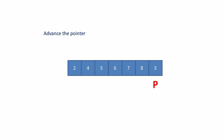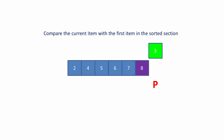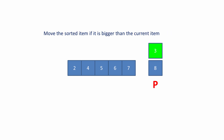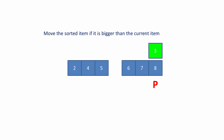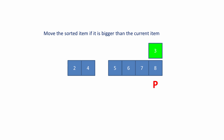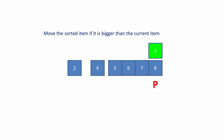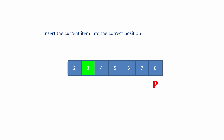Again, advance the pointer. Select the first item in the unsorted section — this is the new current item. Compare it with the first item in the sorted section and move the sorted item because it's bigger than the current item. Compare the current item with the next item in the sorted section and move it. Again, and again — notice how the sorted items are being shuffled along to make room for the current item. Another comparison: 4 is bigger than 3, so we move it. One more time: 2 is not bigger than 3, so we've found the correct position for the current item and it can be inserted into place.